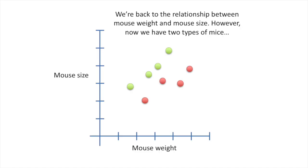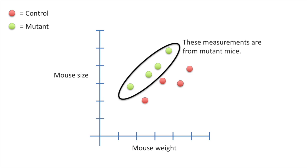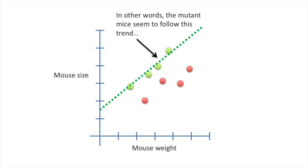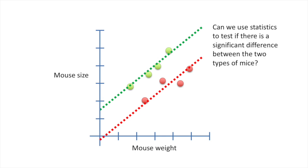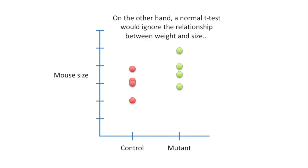We're back to the relationship between mouse weight and mouse size, but now we have two types of mice. The control mice are normal, and the mutant mice are made tall and skinny. By eye, we can see that mutant mice tend to be larger even if they weigh the same — the mutant mice seem to follow one trend line, and the control mice another. If we just did a regression, we'd get a nice line but it wouldn't tell us if mutant mice are significantly larger. And a normal t-test would ignore the relationship between weight and size — in that case, the p-value is greater than 0.05.